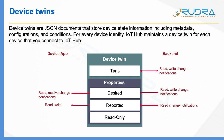The next thing is reported properties. Reported is something that the device can read and write, but the back-end application can only view it. For example, if a device wants to report its battery percentage, and you want to identify all devices with battery percentage less than 10% to trigger a work order to send a field user to replace batteries, you can put that data attribute into reported. The device will write battery percentage regularly into the reported section of the device twin, and your back-end application will produce a report with all batteries less than 10% and raise a work order.